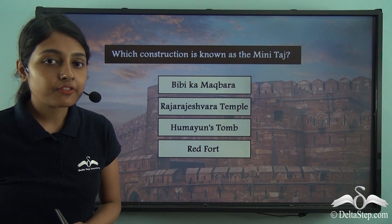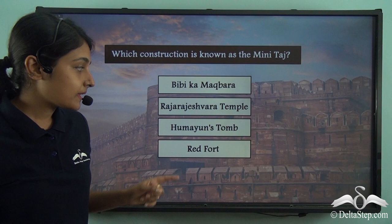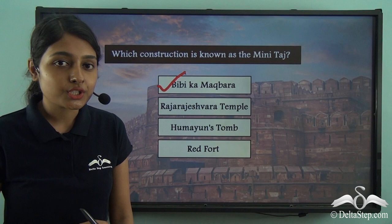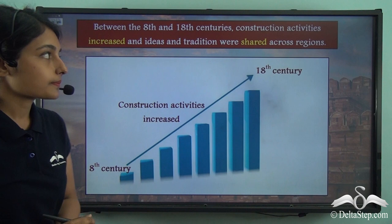Let me ask you a quick question before proceeding. Which construction is also known as the Mini Taj? Is it the Bibi Ka Maqbara, the Raja Rajeshwara temple, Humayun's tomb, or the Red Fort? Yes, you are right — it is the Bibi Ka Maqbara, made by the Mughal Emperor Aurangzeb in memory of his wife Dilras Banu Begum.